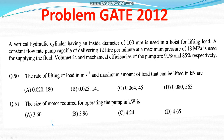Hello students, let us solve a problem from Gate 2012 from Fluid Power. The problem says a vertical hydraulic cylinder having an inside diameter of 100 mm is used in a hoist for lifting load. A constant flow rate pump capable of delivering 12 LPM at a maximum pressure of 18 MPa is used for supplying the fluid. Volumetric and mechanical efficiencies of the pump are 91% and 85% respectively. We have to find out the rate of lifting of load in meter per second, the maximum amount of load that can be lifted in kN, and the size of motor required for operating the pump in kW.